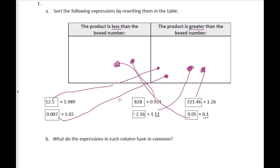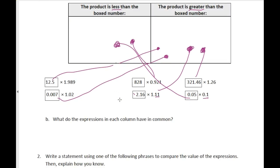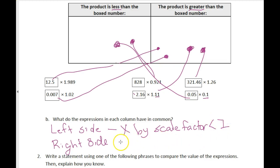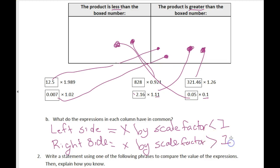Do you see the pattern? You look at the scale factor — what you're multiplying by — and that tells you if it's going to get bigger or smaller. On the left side, multiplying by a scale factor less than one; on the right side, multiplying by a scale factor that is greater than one. That's how they differ.